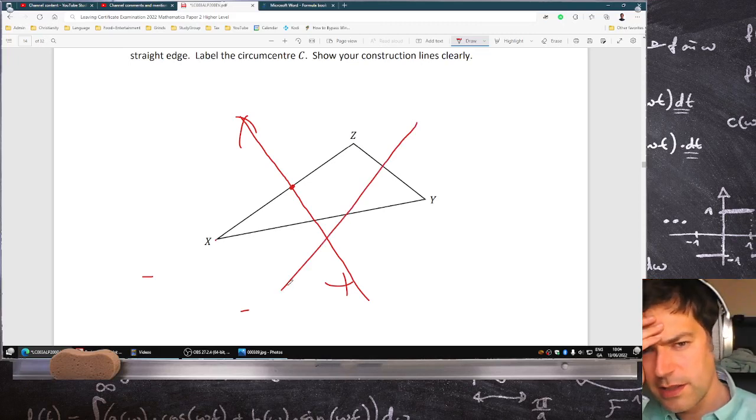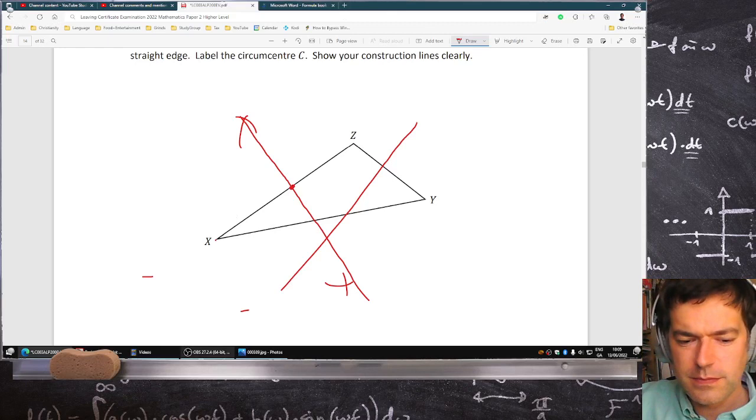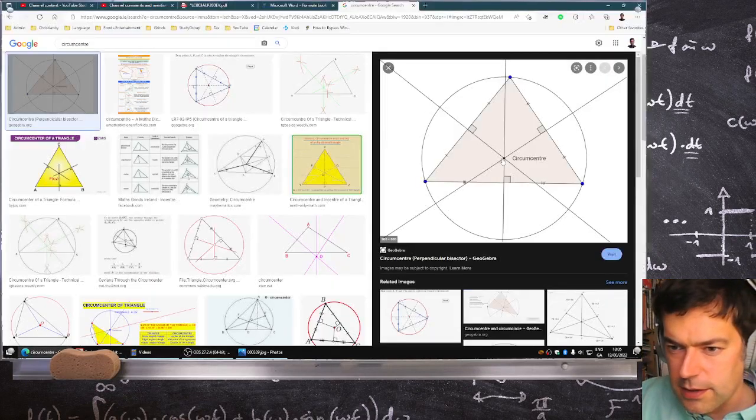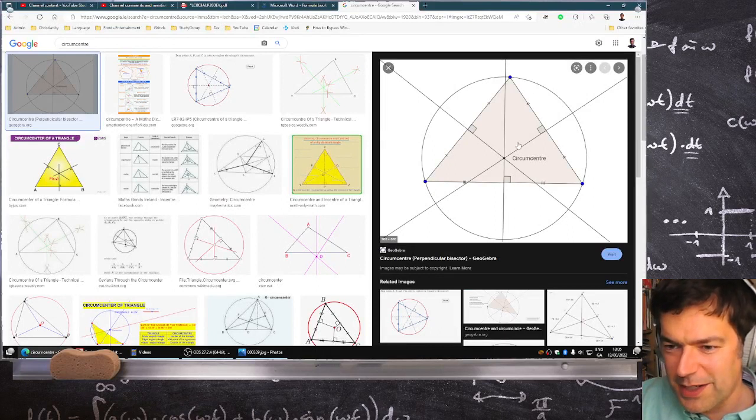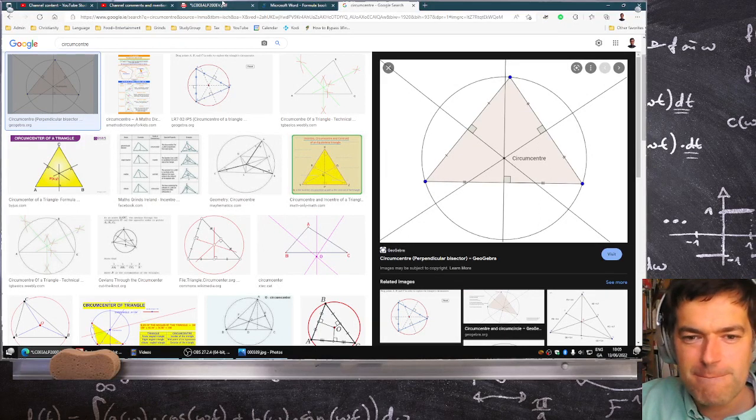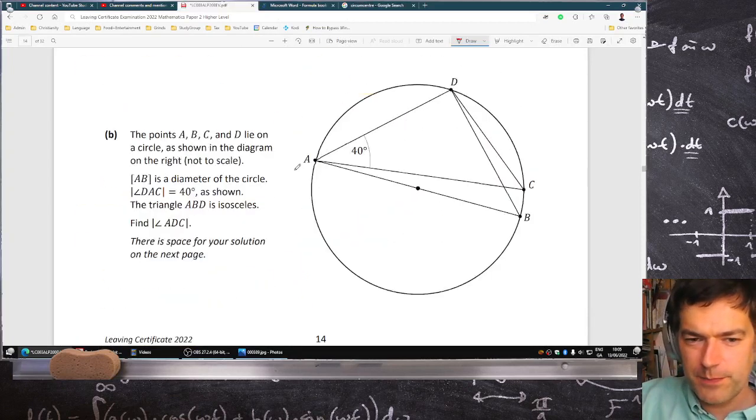That's the circumcenter, I think. I'm pretty sure. Maybe I'll have a quick Google just to be 100%. Yeah, that's it. The perpendicular bisectors—so you have to bisect the line and draw perpendicular using the compass arcs. Okay, I can't do it on the screen, it's too messy.